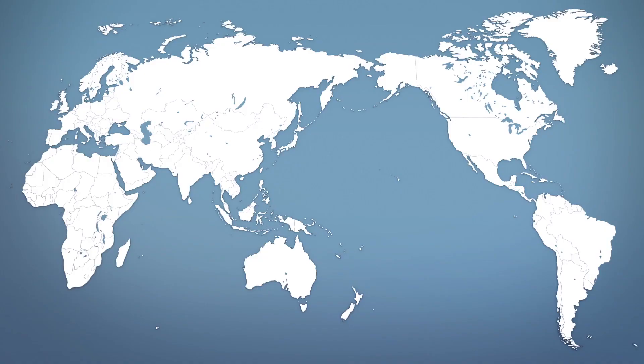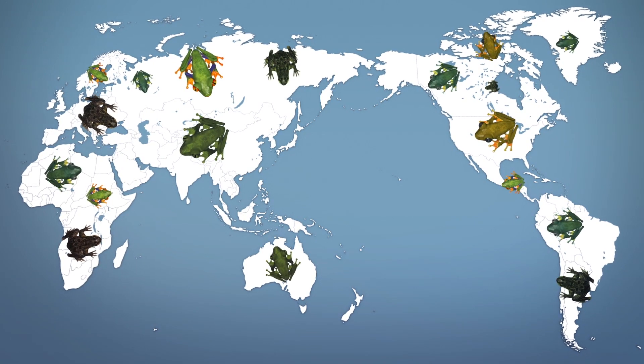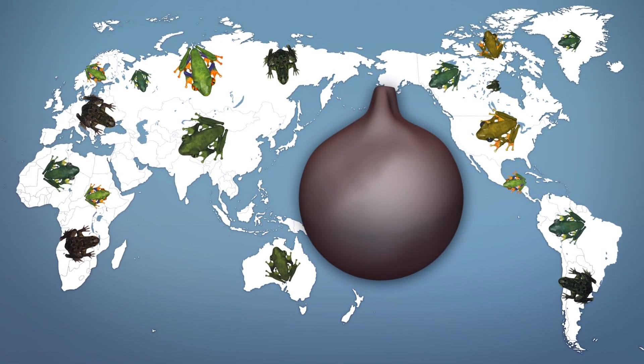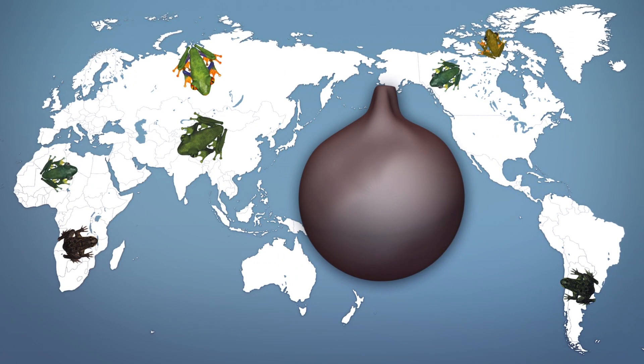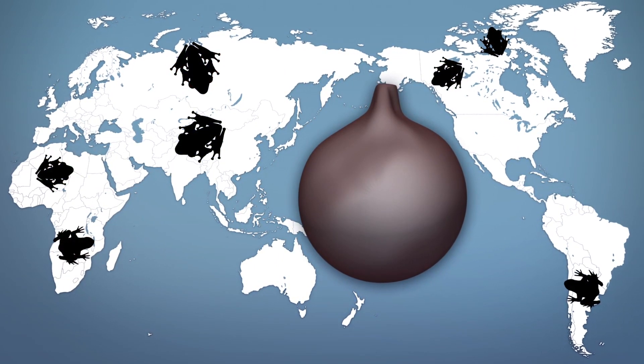According to a paper published in Science, an estimated 501 amphibian species have declined due to chytrid, with 90 confirmed or presumed extinct.